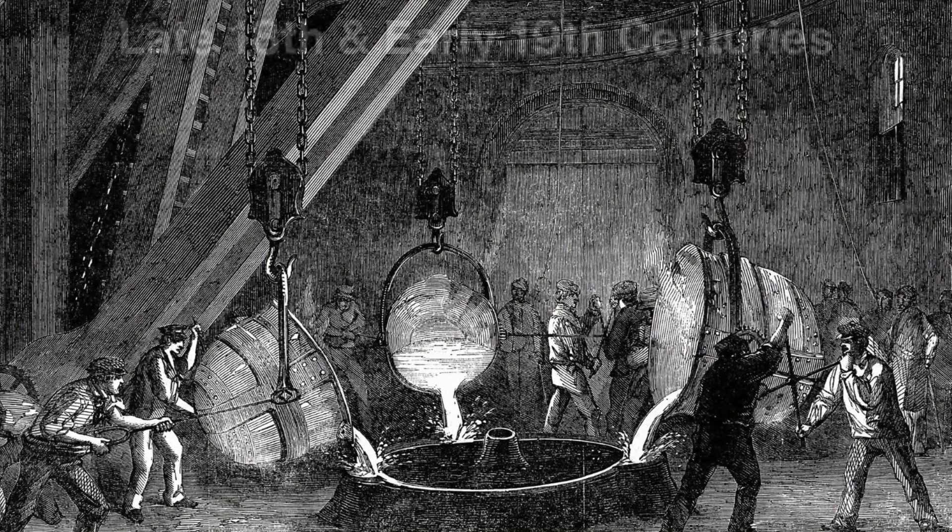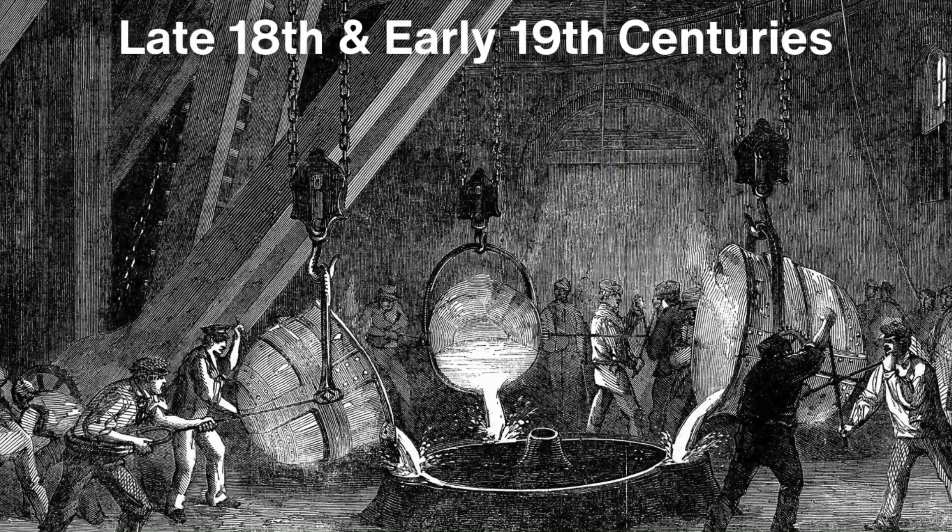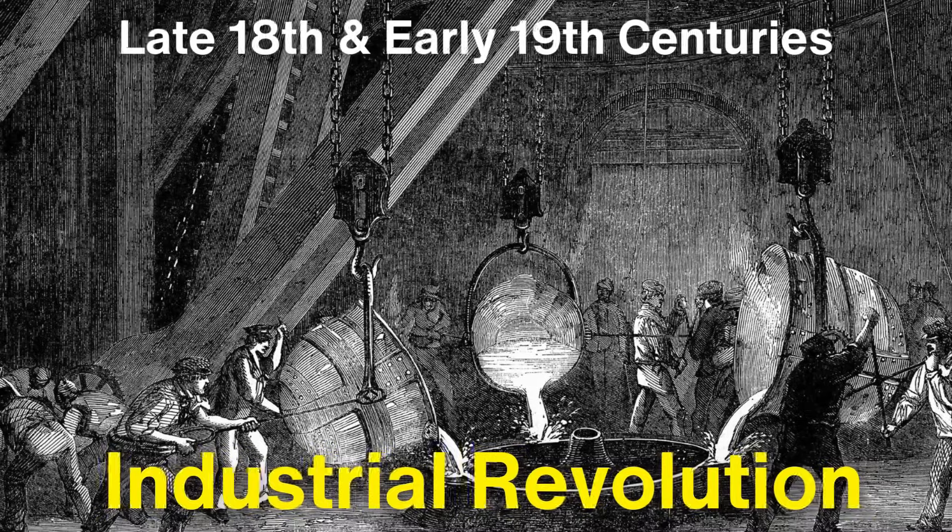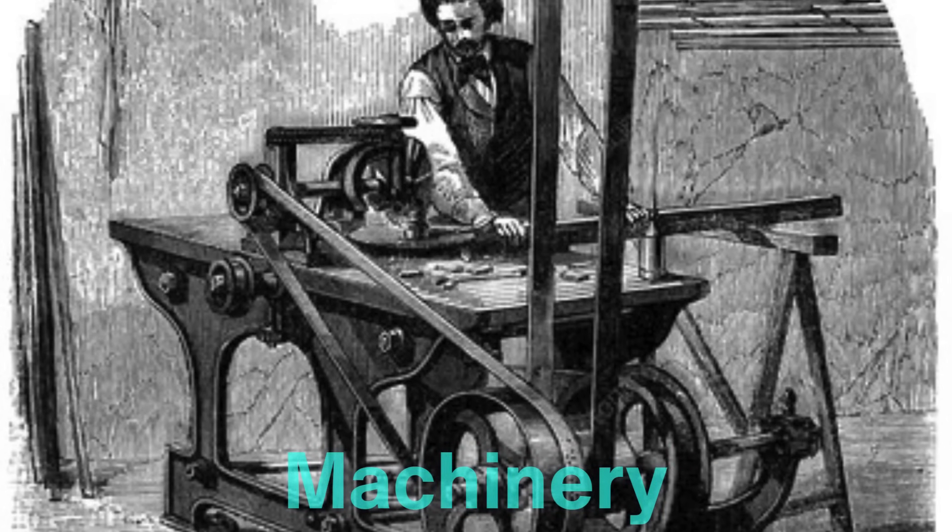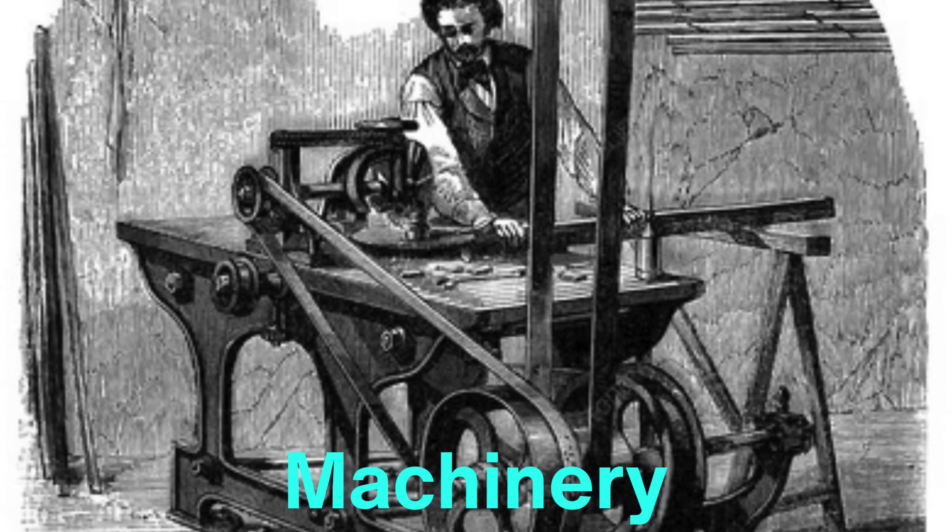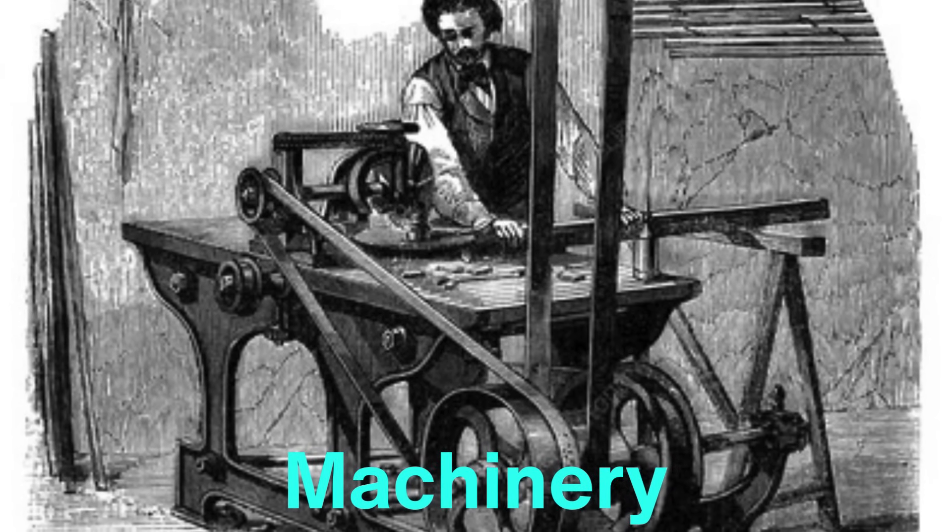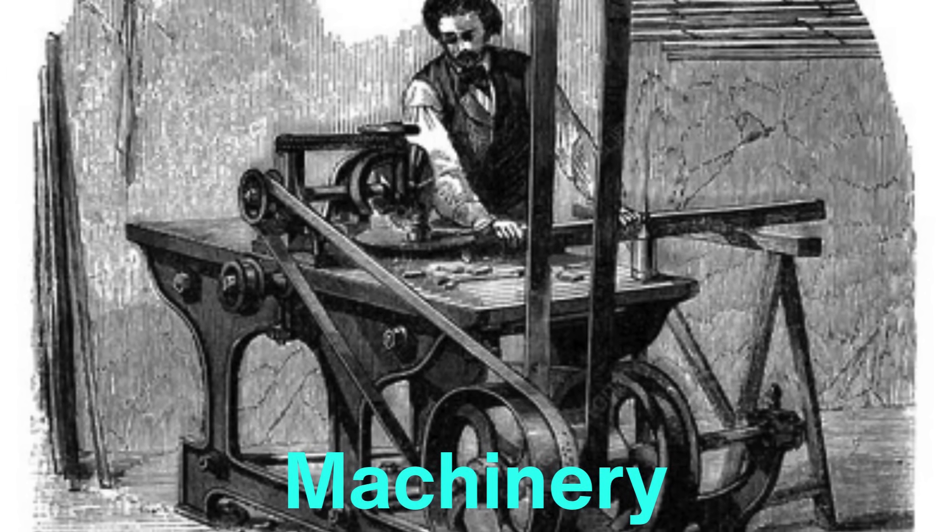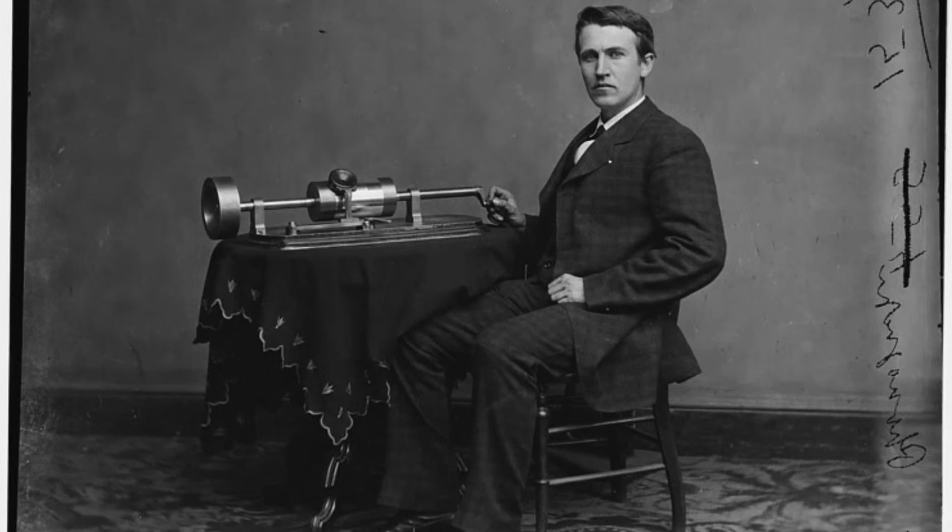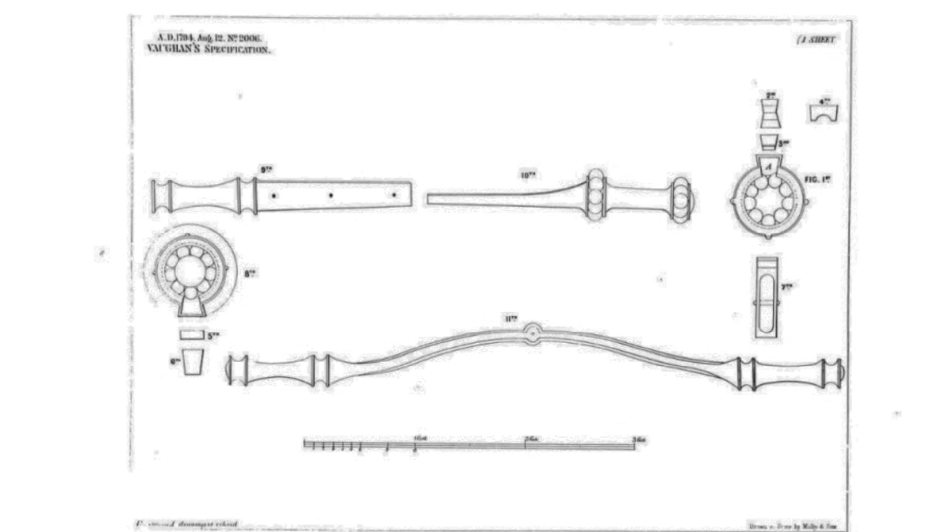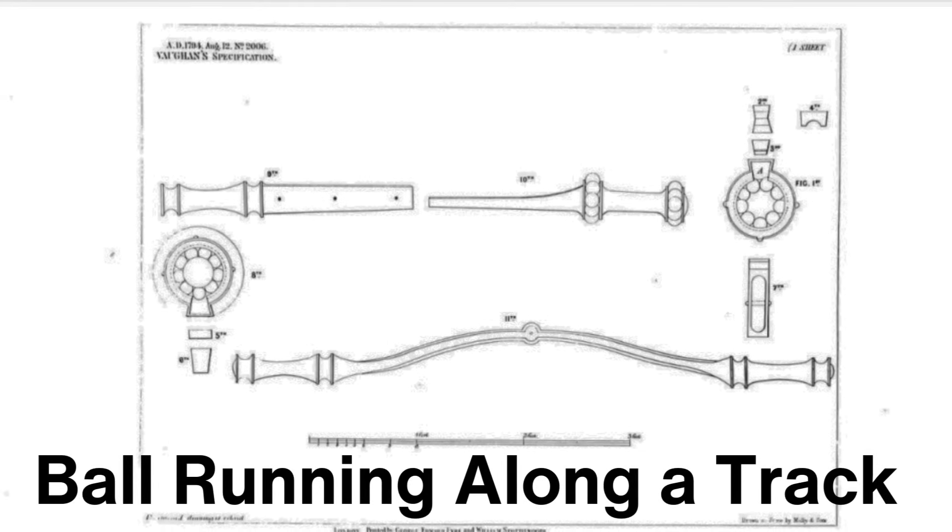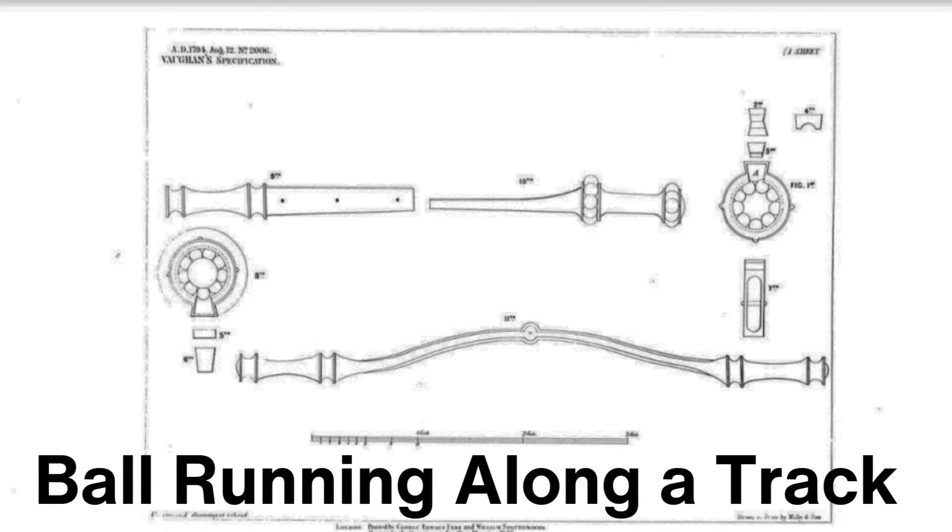It wasn't until the late 18th and early 19th centuries, during the Industrial Revolution, that ball bearings took their modern shape. With machinery becoming more advanced and widespread, the need for components that could reduce friction and wear became critical. The first practical ball bearing was patented by Philip Vaughan in 1794. Vaughan's design included a ball running along a track, allowing for smoother movement.